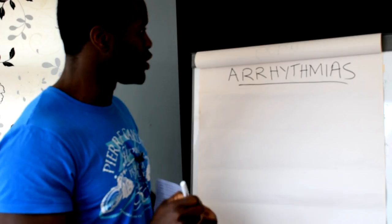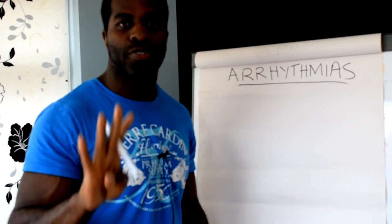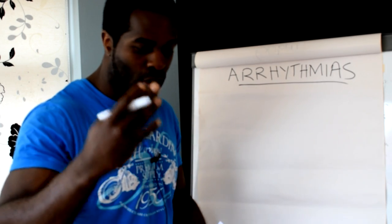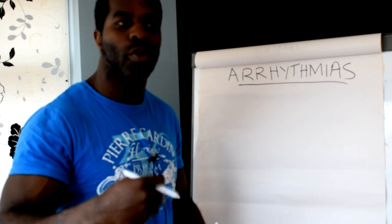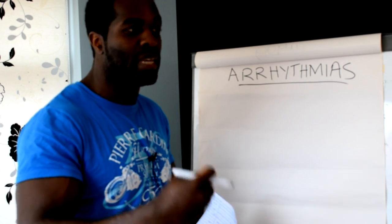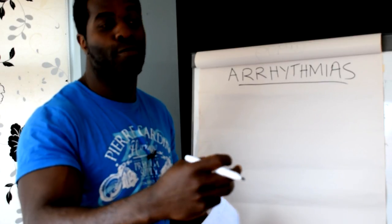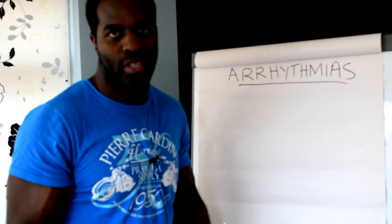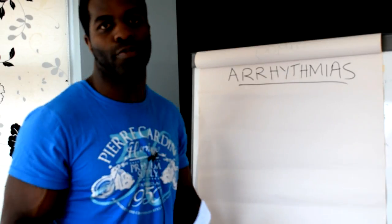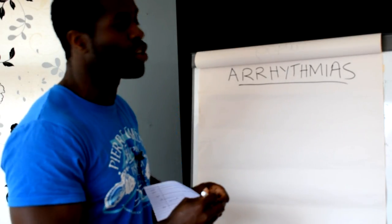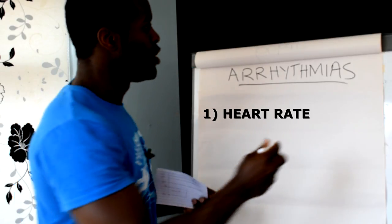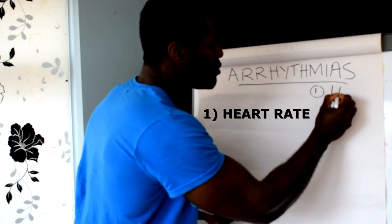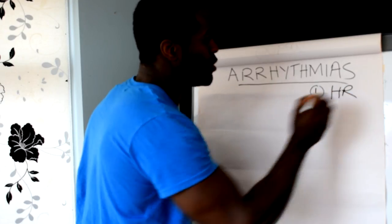In its simplest terms, an arrhythmia is simply an abnormal heart rhythm. So the ultimate question is: what is a normal heart rhythm? There are four criteria that need to be in place for something to be called a normal heart rhythm. The first one — what do you think most people will say? Heart rate. So the first criteria is heart rate, which I'll abbreviate as HR.